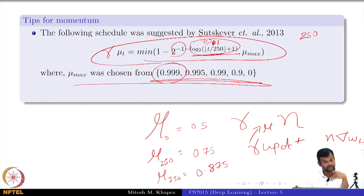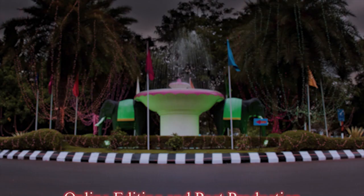As I am increasing the number of time steps, I have more and more faith in the history. That means I do not want to now get distracted by this one update which I am making. I want to go by the history and I am not increasing this gamma or mu indefinitely. I am capping it by a max. So at max I will have this much faith, which is 0.999, in the history. This is again just a heuristic, do not worry too much about it.